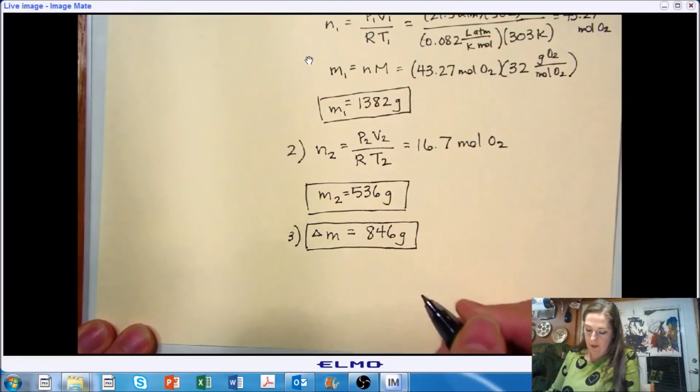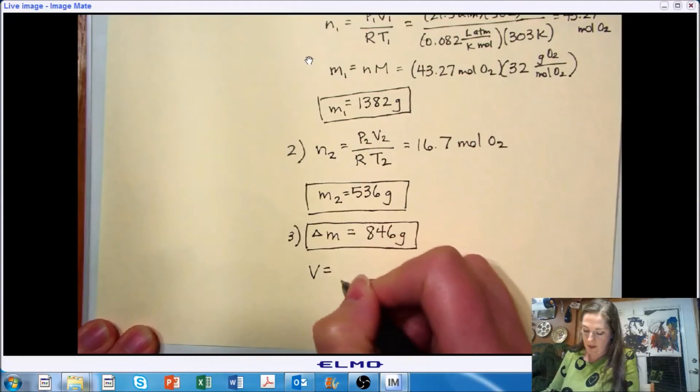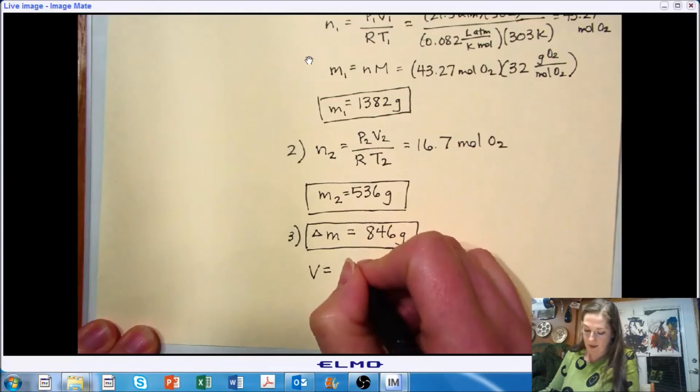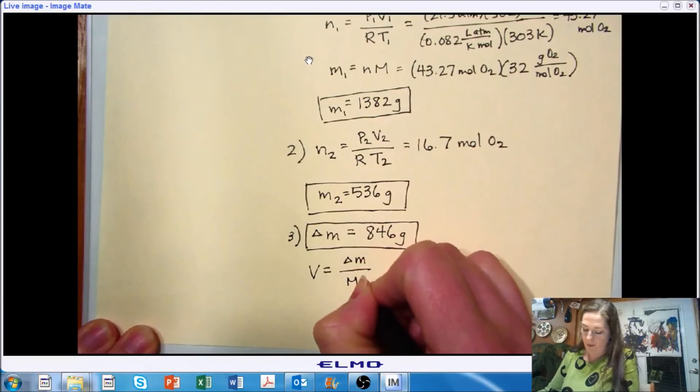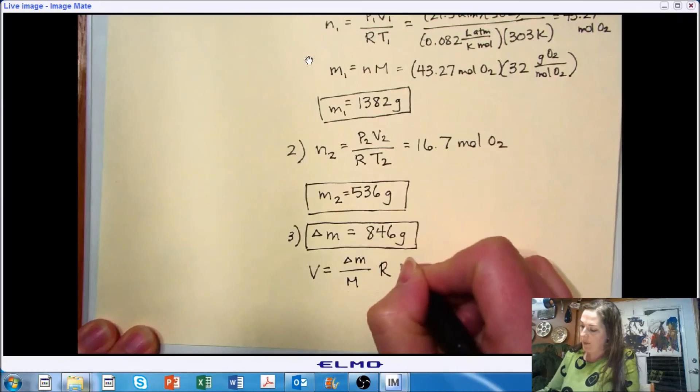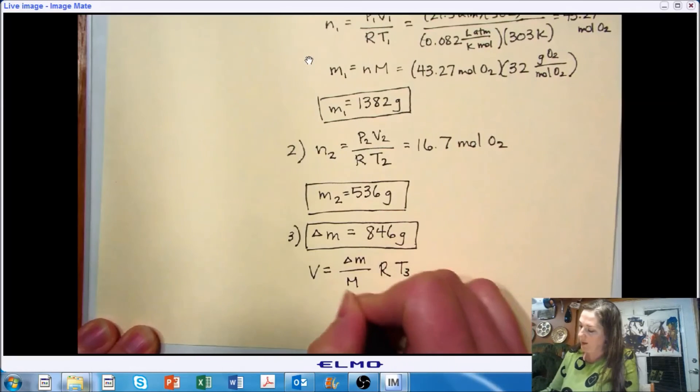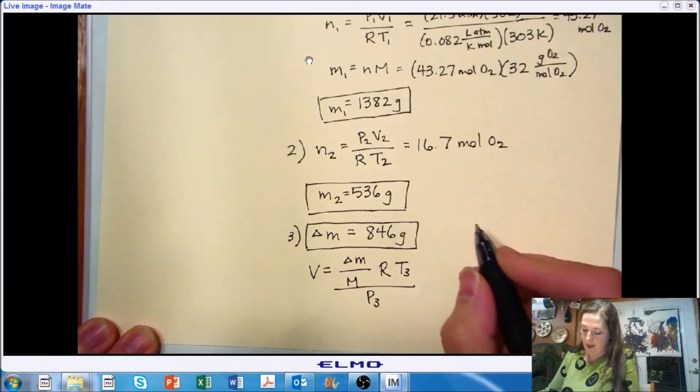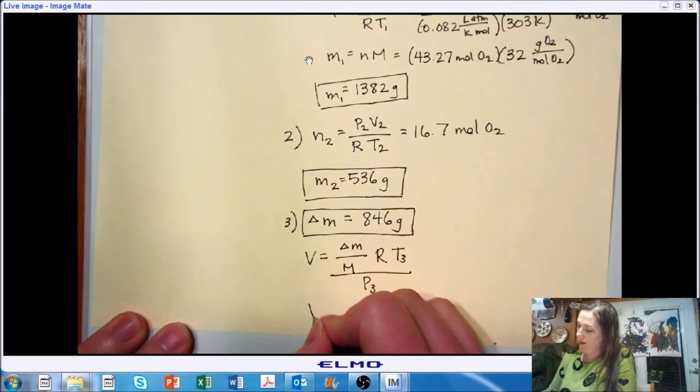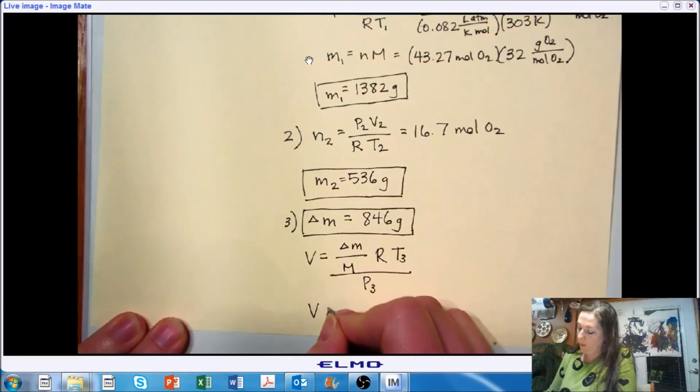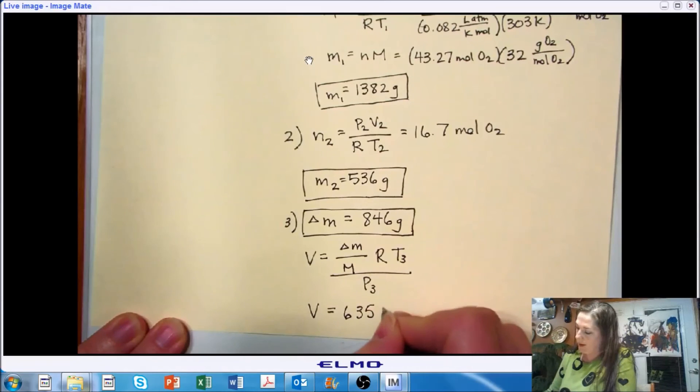Or we could ask for our answer in terms of volume. And if that's the case, then we have a little conversion to do here, where we look at the change in mass over the molecular mass times our ideal gas constant. And we need to factor in the temperature and the pressure at our final state. And if we do that, we would find that our final volume, or the volume released, is 635 liters.